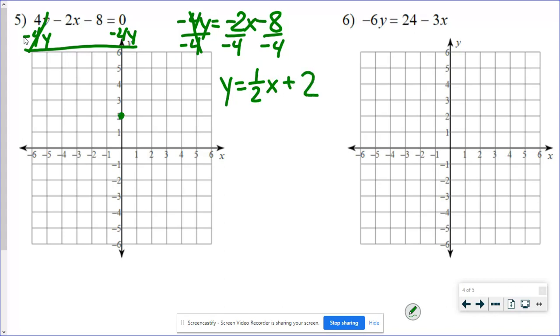So it starts at 2. My slope is a positive 1/2, which means up 1 over 2. Or down 1 and left 2. All right. Last problem.